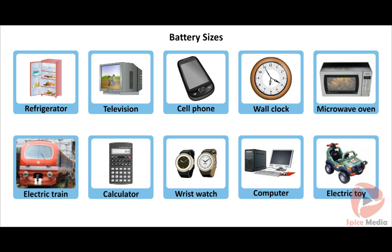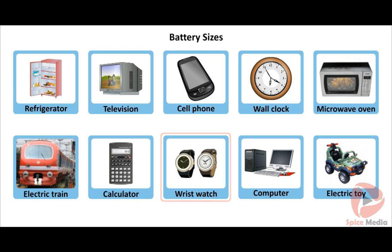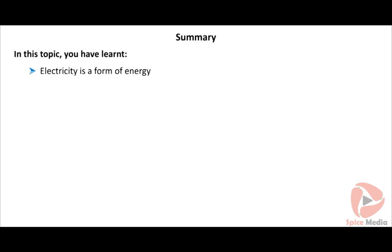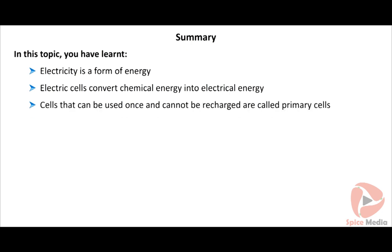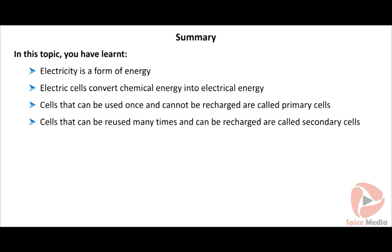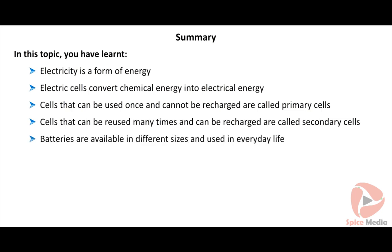The following appliances run on electric cells: wall clock, calculator, wrist watch, and electric toy. In this topic, you have learned that electricity is a form of energy, electric cells convert chemical energy into electrical energy, cells that can be used once and cannot be recharged are primary cells, cells that can be reused and recharged are secondary cells, and batteries are available in different sizes.